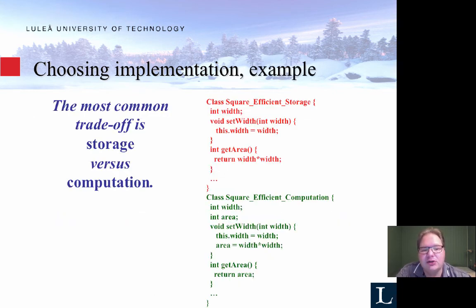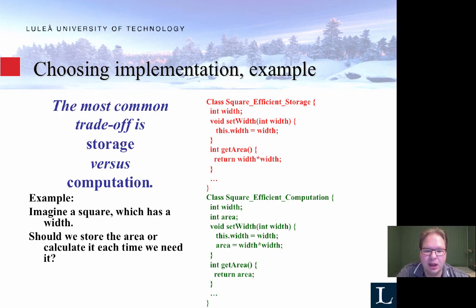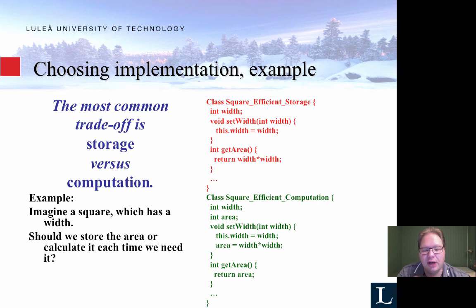There are also trade-offs like storage versus computation. In modern computers this may not be as much of an issue, but consider: to calculate the area of a square you can either store only the width and calculate the area each time someone requests it — saving storage but doing repeated computation — or store both width and area, using more memory but only calculating the area once. When you have performance issues, you always have this choice between using more memory or more computation.